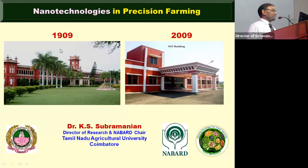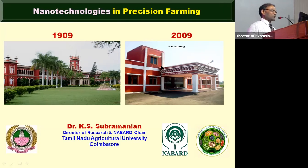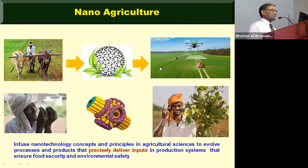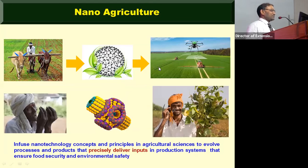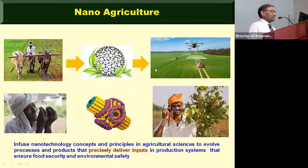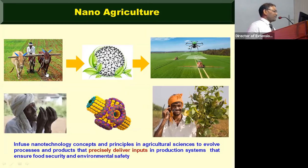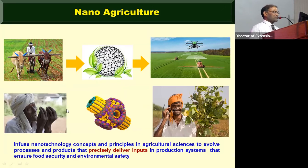I use this picture to say that 1909 is the year in which TNAU was started — exactly one hundred years later, nanotechnology started at our institution. The reason I pursue nanotechnology in agriculture is to show that we are changing the scenario of agriculture from traditional farming practices.